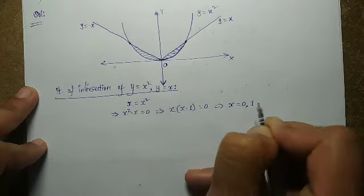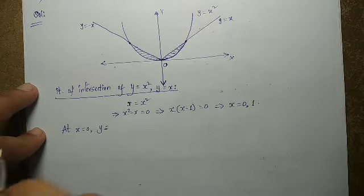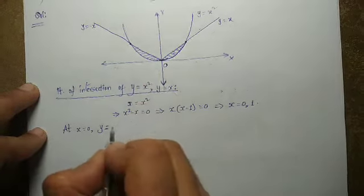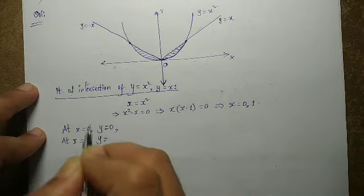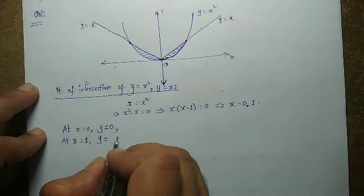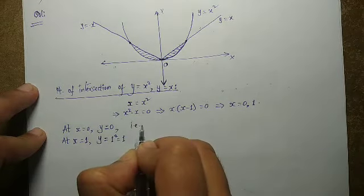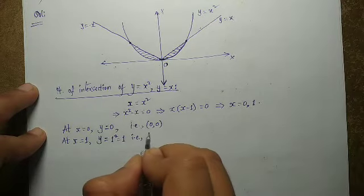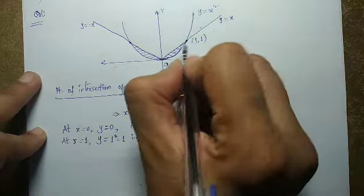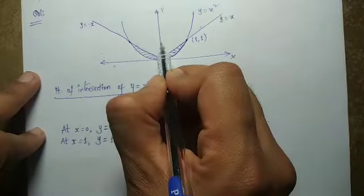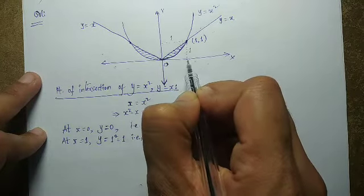At x = 0, y = 0, giving the origin. At x = 1, y = 1, giving the point (1, 1). So the two intersection points are the origin and (1, 1), each axis segment being 1 unit.